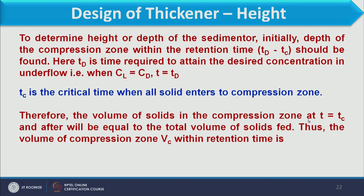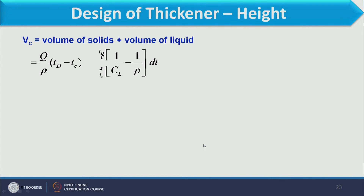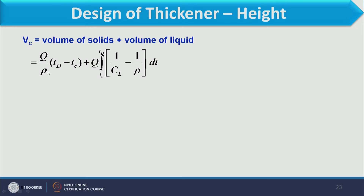Therefore, the volume of solid in the compression zone at time T equal to Tc and after will equal the total volume of solids fed. Thus the volume of the compression zone within the retention time is the volume of solid plus volume of liquid available in the compression zone. The volume of solid is Q divided by rho, multiplied by Td minus Tc, where Q is the total feed.